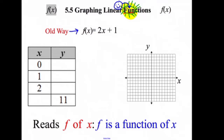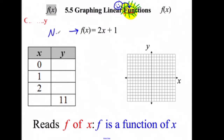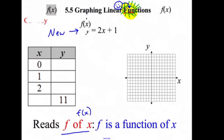We're going to say now that f of x equals 2x plus 1. This is the new way — the new method. It reads 'f of x.' That's how you read this thing. It means f is a function of x. So: old way is y equals 2x plus 1; new way is f of x equals 2x plus 1.